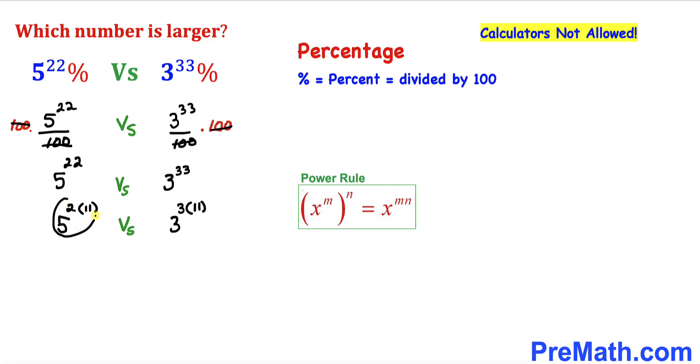Therefore, the left-hand side number could be written as 5 to the power of 2, and then to the power of 11. Likewise, on the right-hand side, this could be written as 3 to the power of 3, and then to the power of 11.